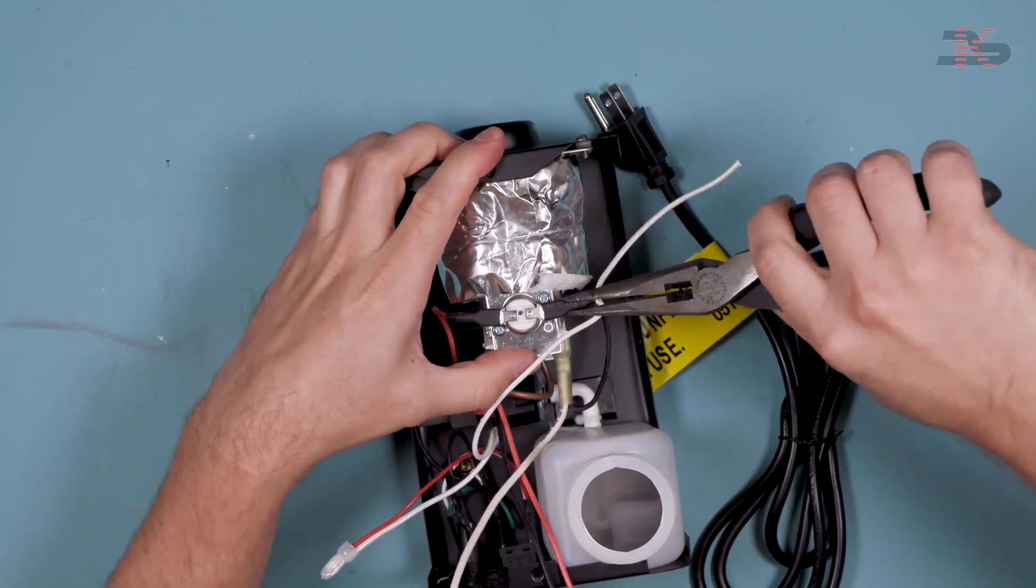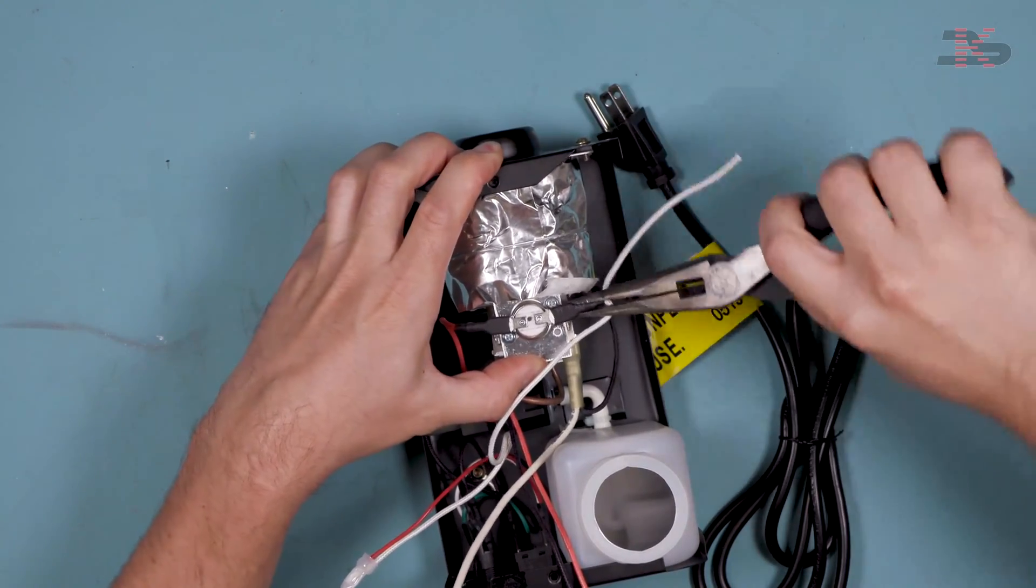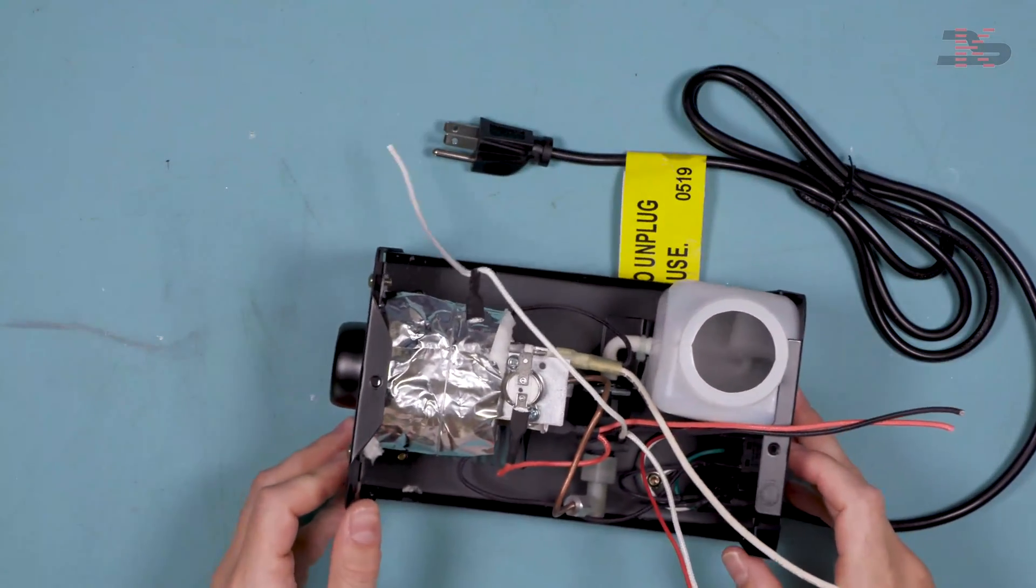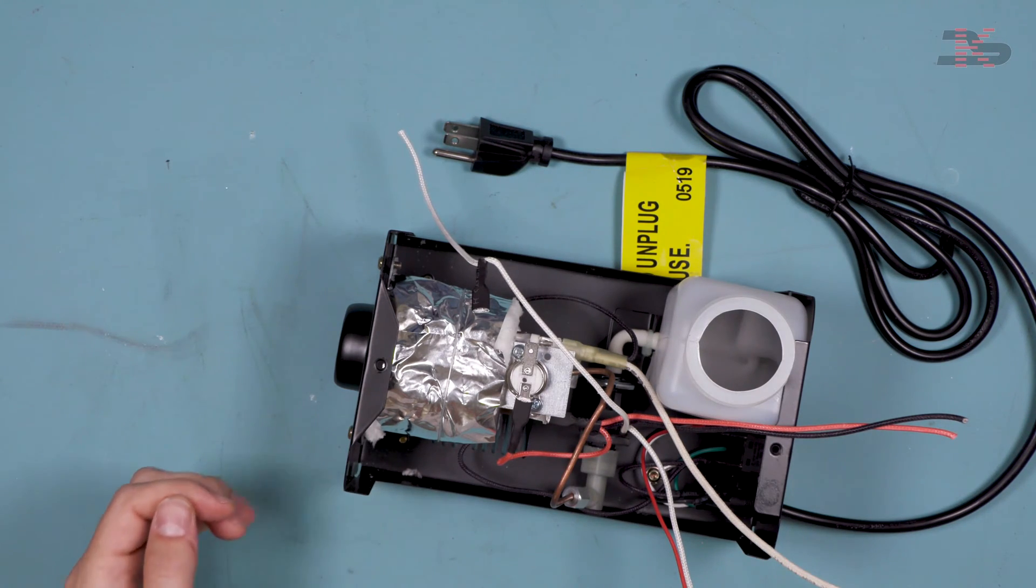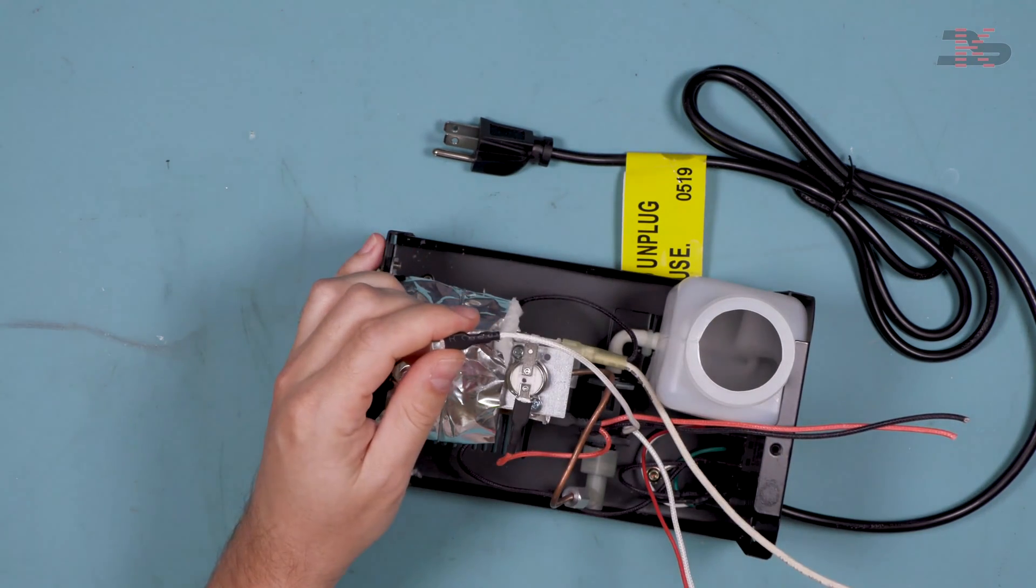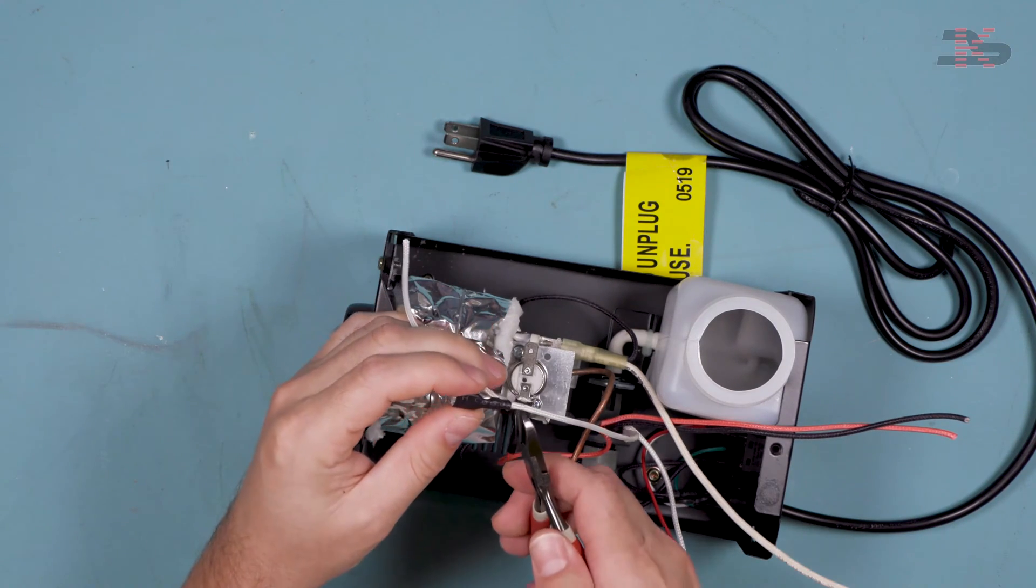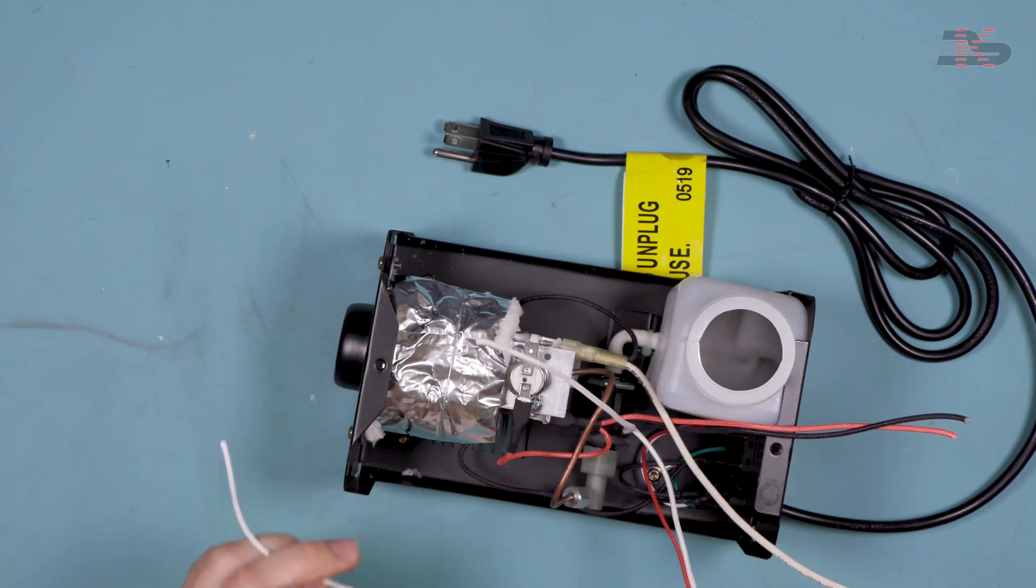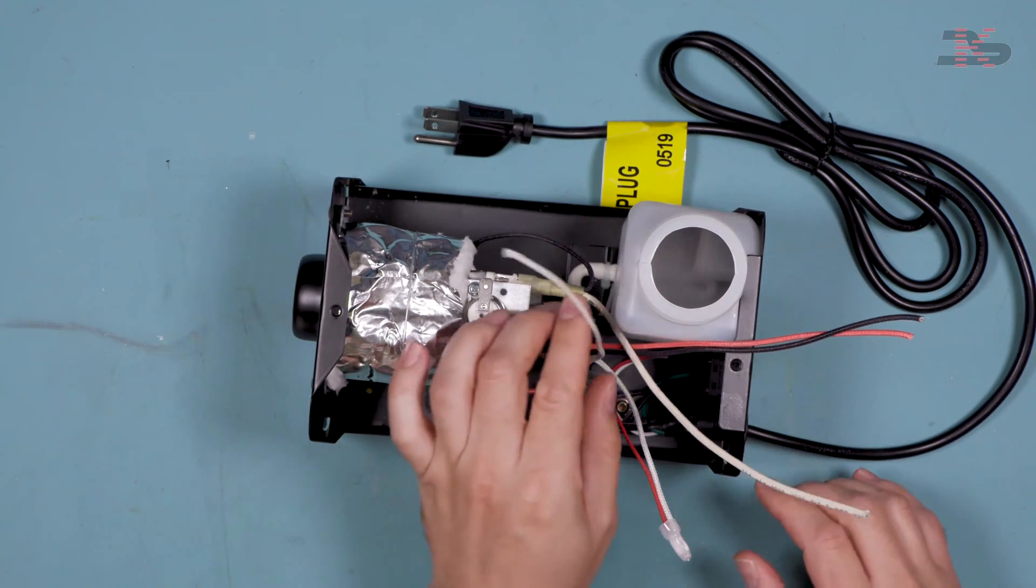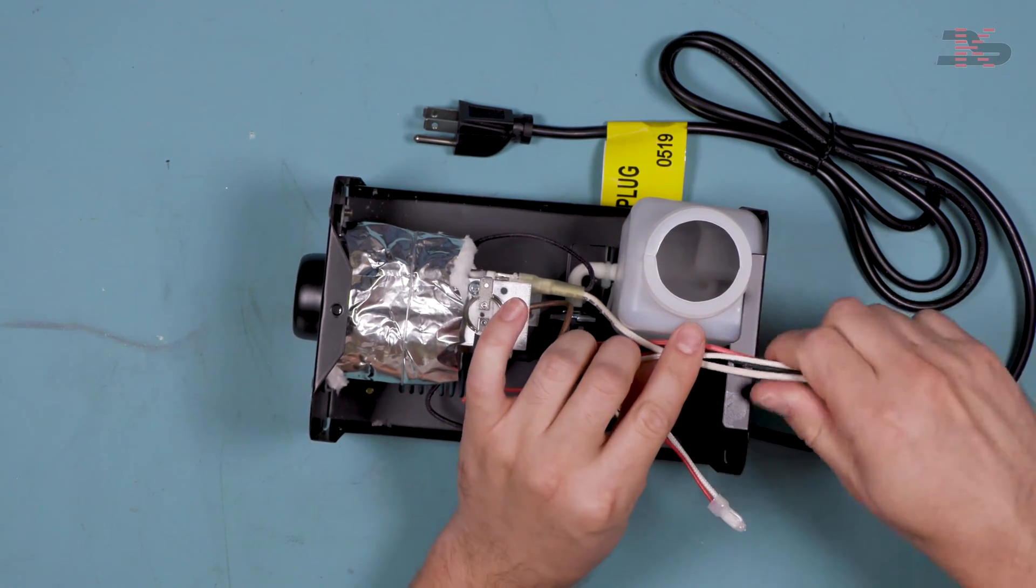So we are going to remove this connector off of here. Again, these can be a little tight, so we might have to use some force. And once that's off, I'm actually just going to remove it from the cable here because we only need one of these. So now we have our four wires that we will need for the controller. So we'll bring this guy over here with the other ones and we'll come back to those later.